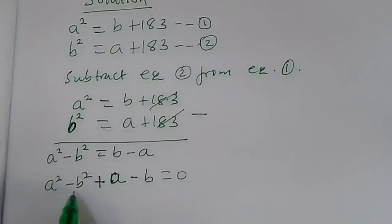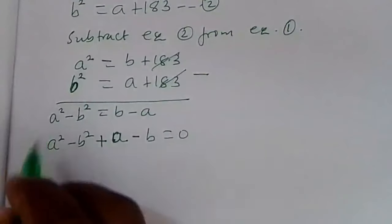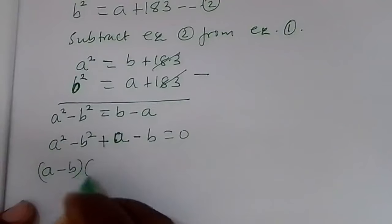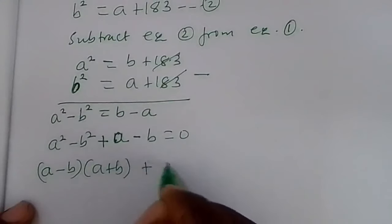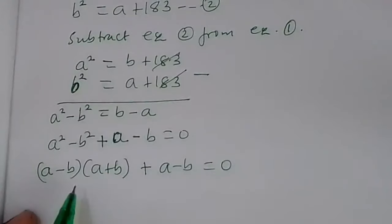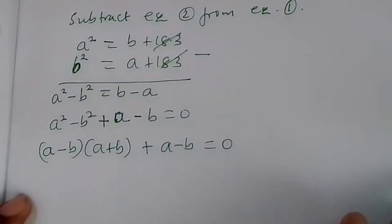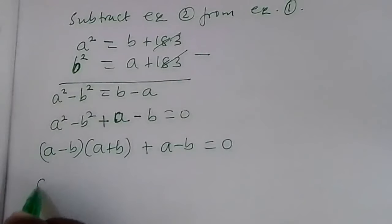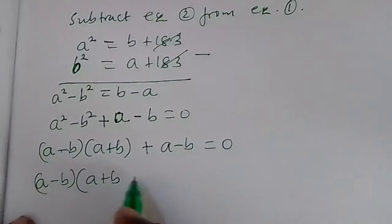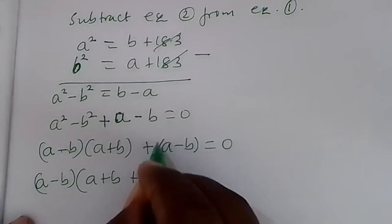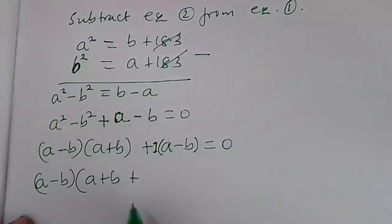Now let us factorize. The first two terms form the difference of two squares, giving us a minus p into a plus p. So we have a minus p into a plus p, plus a minus p equals zero. As you can see, a minus p is common, so we pull it out, giving us a minus p times quantity a plus p plus 1 equals zero.